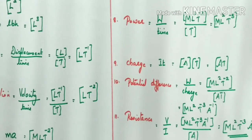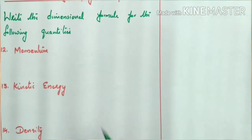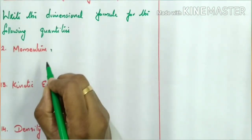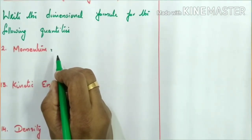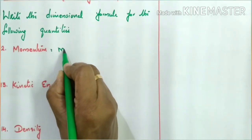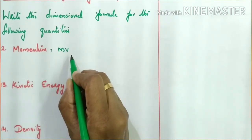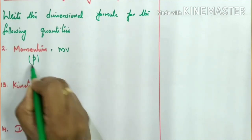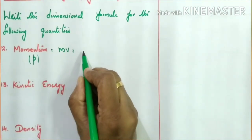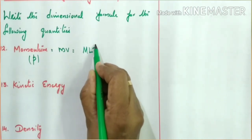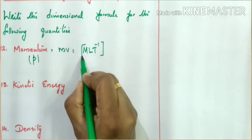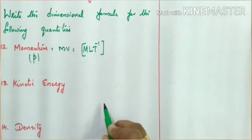Now write the dimension of momentum. You have already studied momentum in 9th standard. Momentum is mass into velocity, represented by p = mv. The dimension of mass is M and the dimension of velocity is [LT⁻¹]. So the dimensional formula for momentum is [MLT⁻¹].